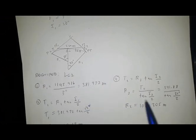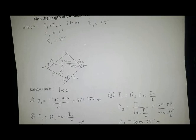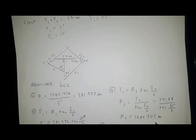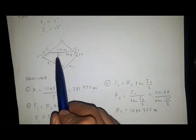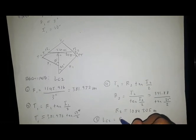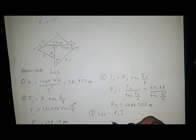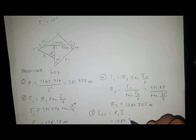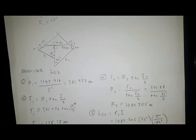With the radius of the second curve and its central angle known, we can now solve for LC2. LC2 equals R2 times I2 in radians, so LC2 equals 1084.305 times 35 degrees multiplied by pi over 180 degrees to convert the angle to radians.